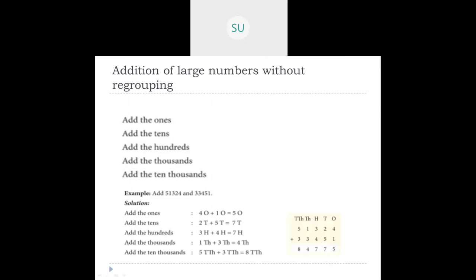For example, 51,324 plus 33,451. We write it in the place value table and start adding from the ones: 4 plus 1 is 5, tens 2 plus 5 is 7, hundreds 3 plus 4 is 7, thousands 1 plus 3 is 4, ten thousands 5 plus 3 is 8. So the answer is 84,775. This is how you do addition of large numbers without regrouping.